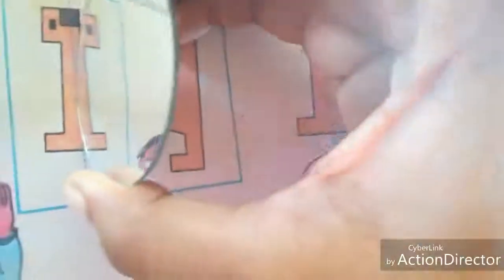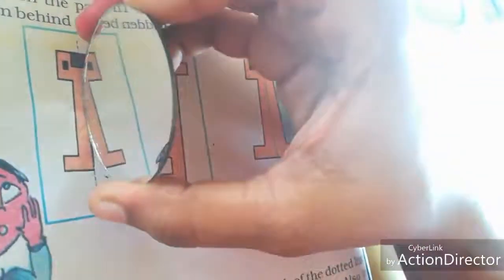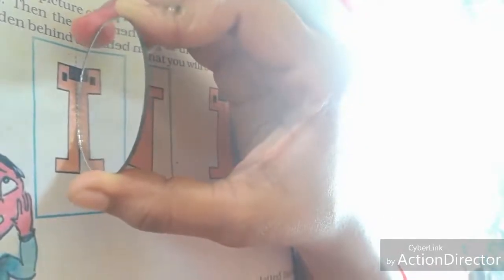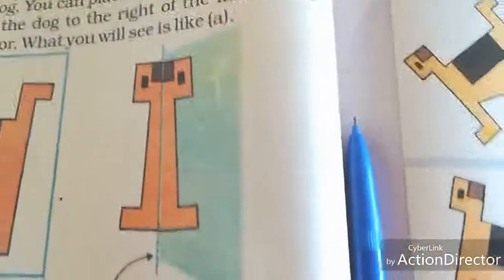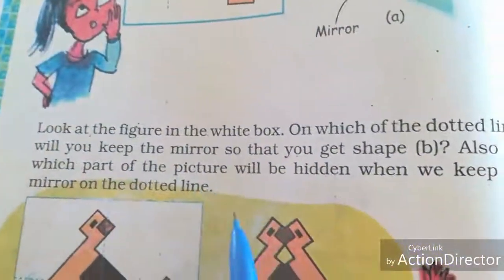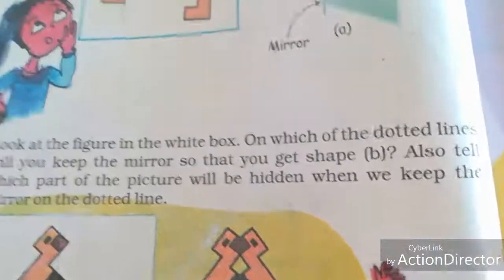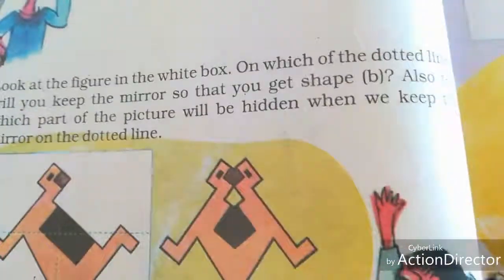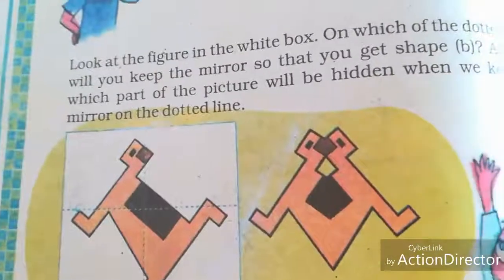Now I don't have a mirror in a normal shape, I have a circular mirror. Look here. You can see an image like A. Next, look at the figure on the whiteboard. On which of the dotted lines will you keep a mirror so that you get shape B? Also tell which part of the picture will be hidden when we keep the mirror on the dotted line.